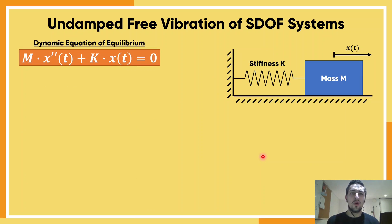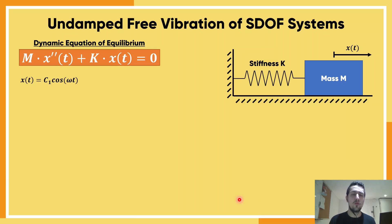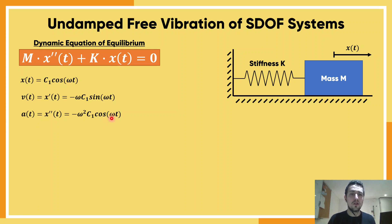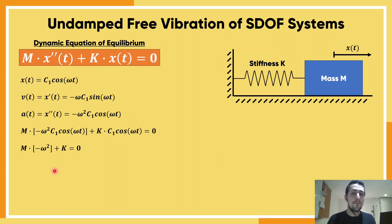We're trying to solve this dynamic equation of equilibrium. You might ask: what is the function that starts repeating itself after two derivatives? A cosine wave has that property. If we consider a cosine wave with amplitude c1 and frequency omega, and differentiate twice: the first derivative gives the velocity (cosine becomes minus sine, and by the chain rule, omega pops out); the second derivative gives the acceleration (minus sine becomes minus cosine, and omega pops out again). So we started with c1 cosine(ωt) and ended with something times c1 cosine(ωt). Substituting back into the dynamic equation of equilibrium, this can only be valid if ω² equals k over m.